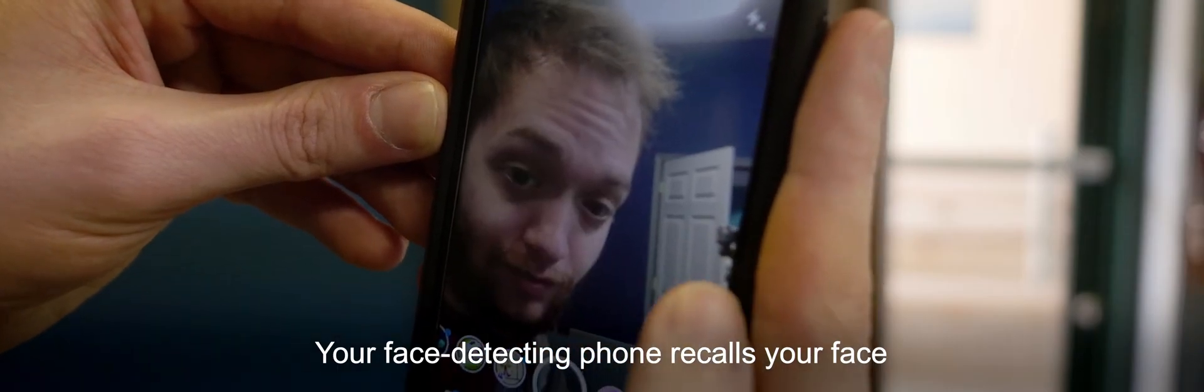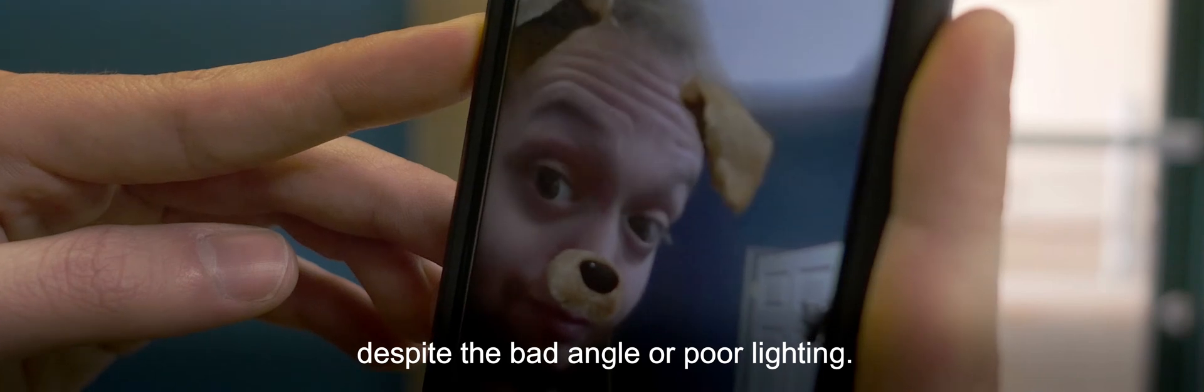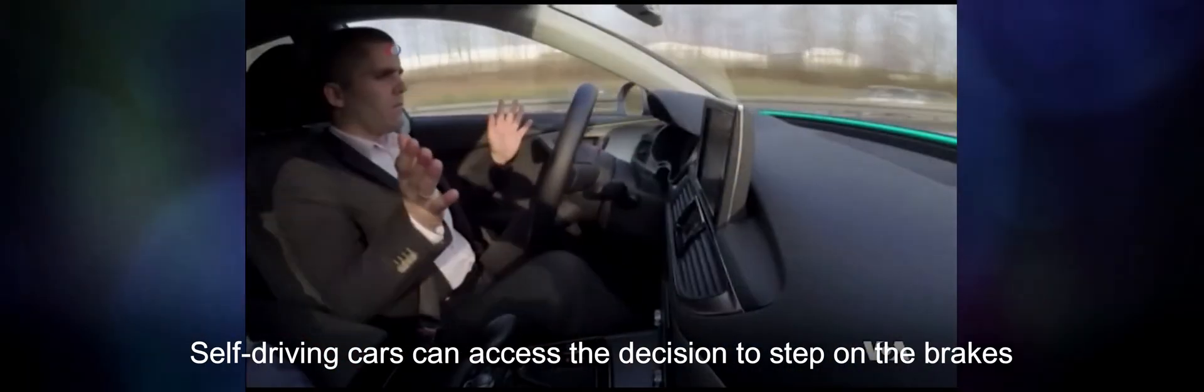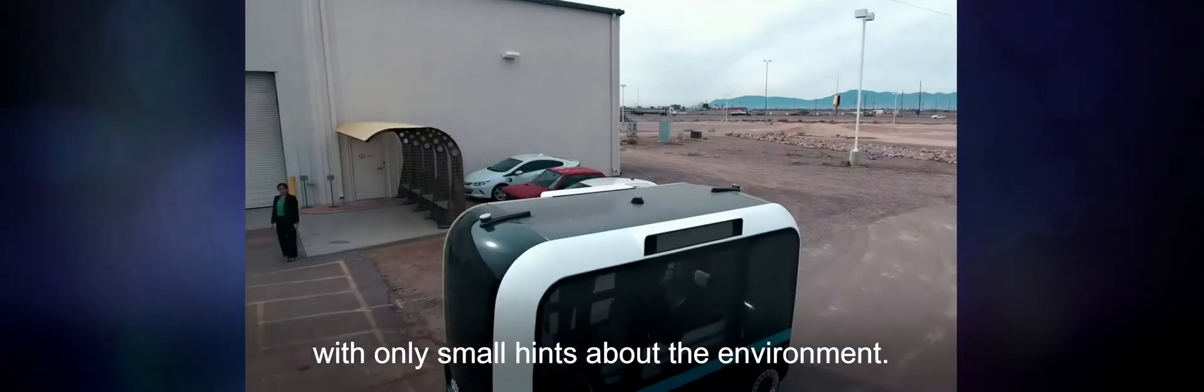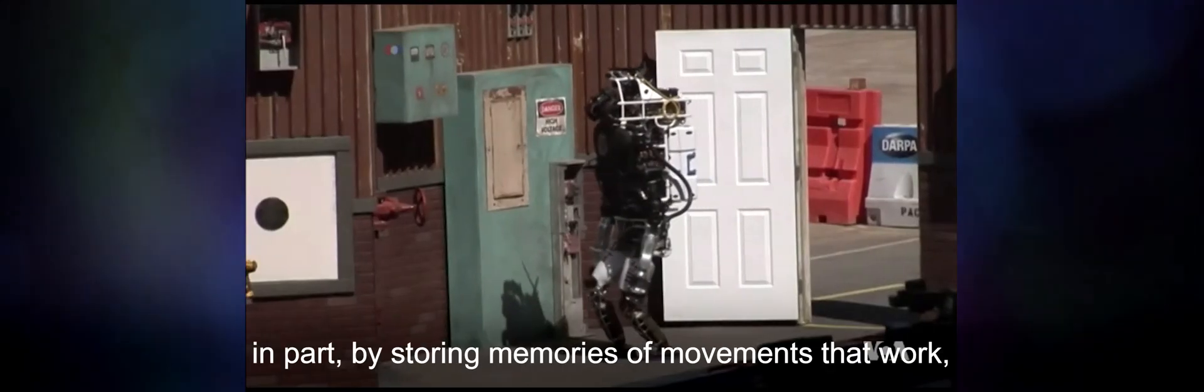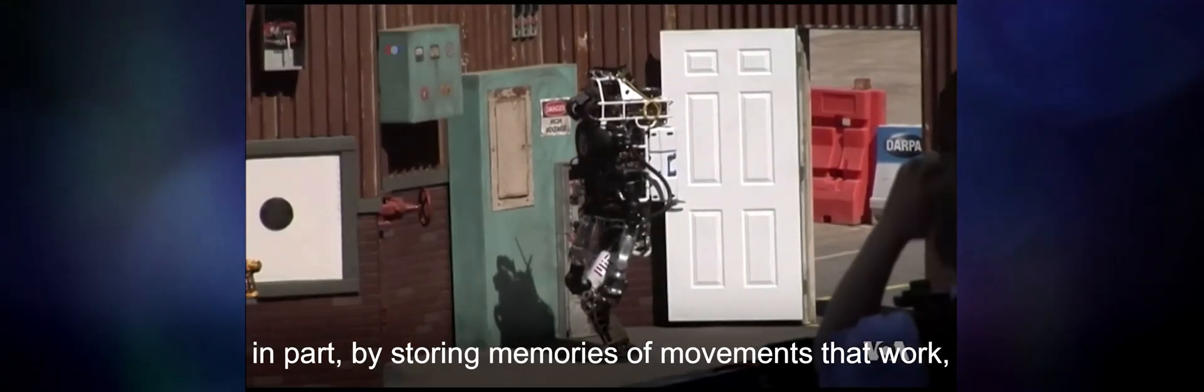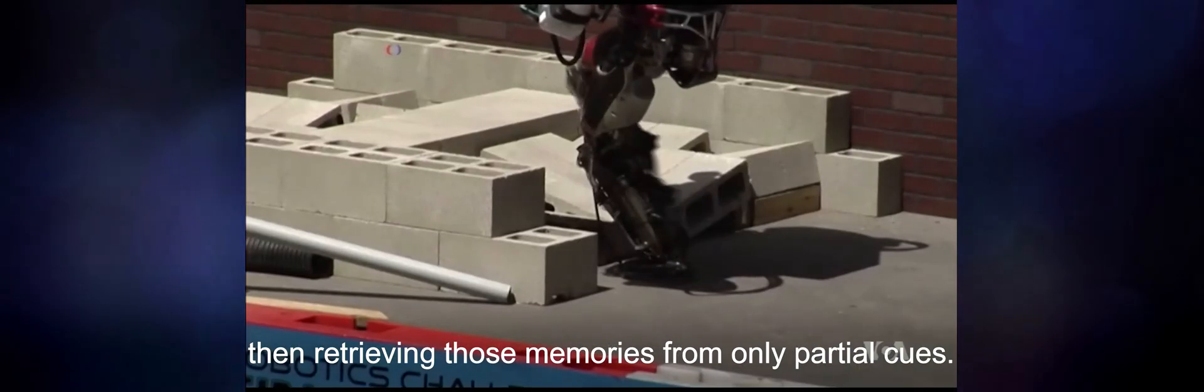Your face-detecting phone recalls your face despite the bad angle or poor lighting. Self-driving cars can assess the decision to step on the brakes with only small hints about the environment. And with these ideas, real robots learn to walk, in part by storing memories of movements that work, then retrieving those memories from only partial cues.